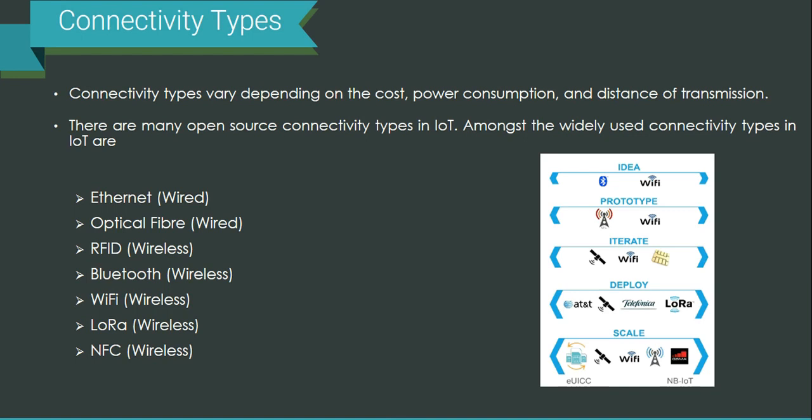I am going to first highlight the two wired connectivity options. The first one is Ethernet, the second one is optical fiber. The rest of the options available are RFID, Bluetooth, Wi-Fi, LoRa, and NFC — all of these are wireless options.